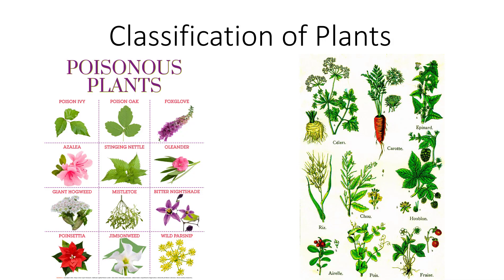How were plants classified before Linnaeus, the father of modern taxonomy, came into the picture? They were simply classified as either harmful or poisonous and shouldn't be eaten, or whether they were useful and could be used for food, spices, medicinal purposes, construction, transportation, and communication. It seems practical, but it's a bit subjective, and there are 391,000 plant species identified so far. I'm Dr. DeBusk, and in this video, you will learn how plants are classified.